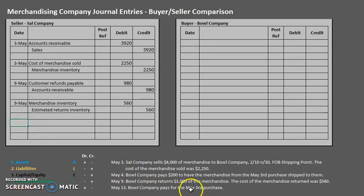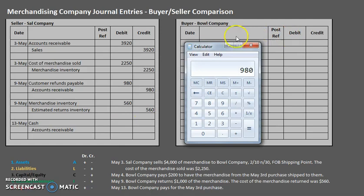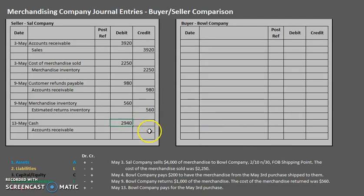Whenever we do these entries, the sales price entry has to be adjusted for any sales discounts. Anything that was for the cost — what we originally paid — is not subject to the discount percentage. On May 13th, Bull Company pays for the May 3rd purchase. As the seller, cash is going to go up and Accounts Receivable is going to go down. Originally the buyer owed us $3,920, but they returned $980 worth, so the cash we are actually receiving is $2,940. The buyer paid within the ten-day discount period.